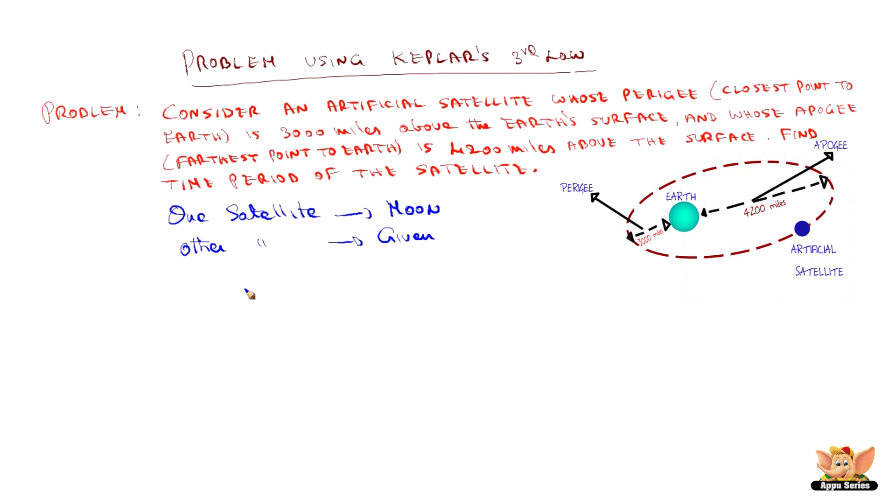we find out for the satellite average distance. Since we need to use Kepler's third law, Kepler's third law states the distance from the center. So, this becomes from the surface, we have to take average distance from earth's surface is 3000 plus 4200 by 2, which is 7200 by 2, which is nothing but 3600 miles.